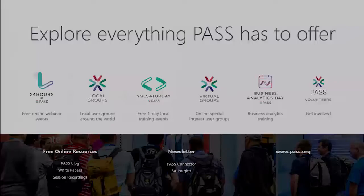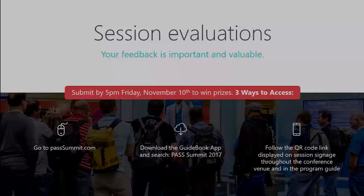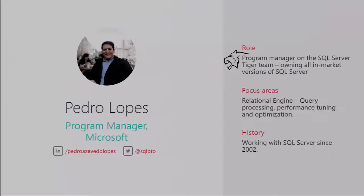Please silence your phones and submit your evaluations at the end. My name is Pedro Lopes. I'm a program manager in the SQL Server Tiger Team. The Tiger Team owns all in-market versions of SQL Server, from 2012 all the way to SQL 2017. I focus primarily on the relational engine — whatever makes your queries tick — and I enjoy specifically performance tuning and optimization.